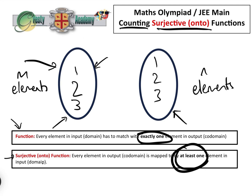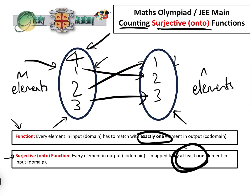If m equals n — say three elements in the domain and three in the codomain — that could be onto, and it's actually bijective as well since it's both surjective and injective, which we'll cover in the next video. What we're really interested in here is when m is greater than n, i.e. there are more elements in the domain than in the codomain. The question always becomes: with these extra elements, where do they go and how do we count them?